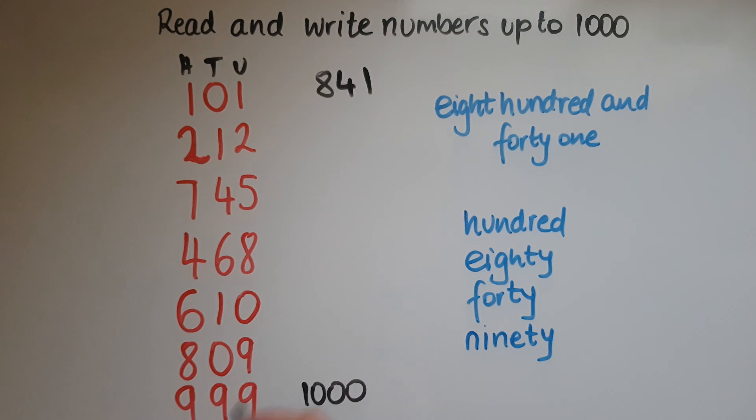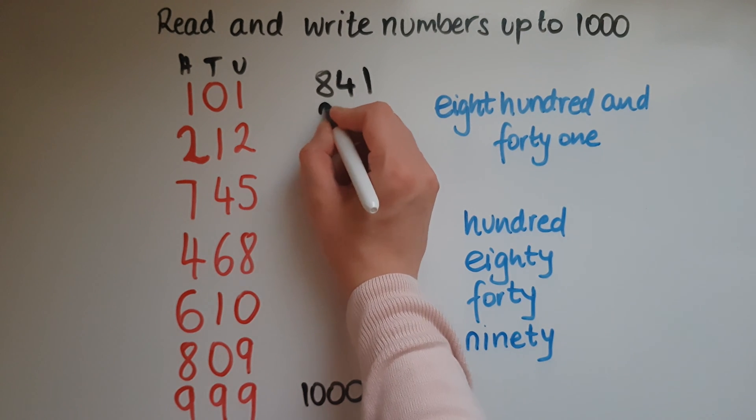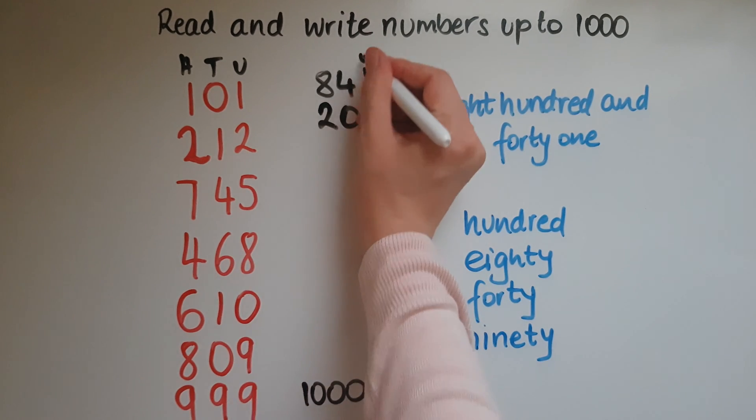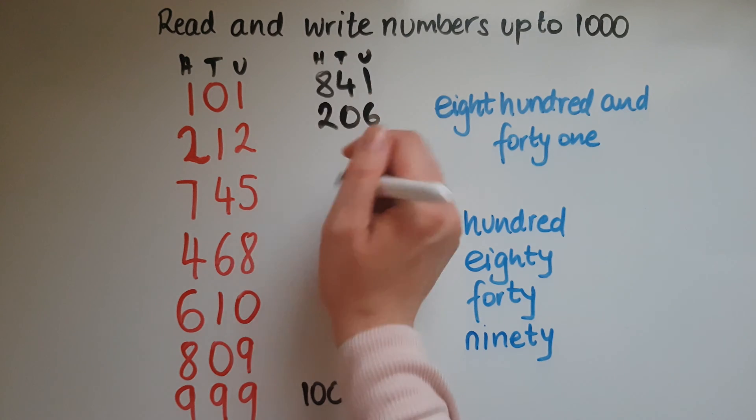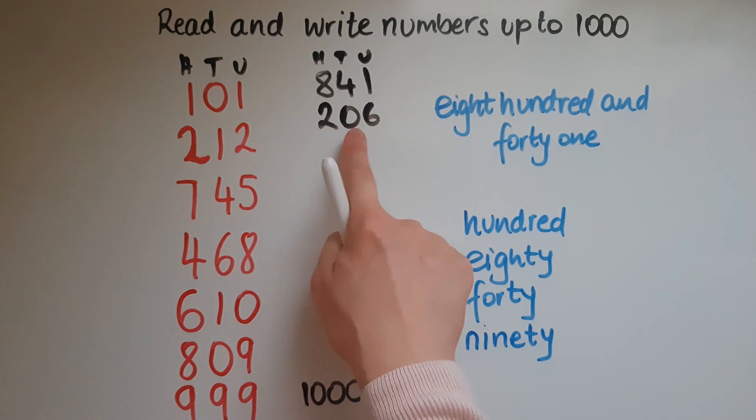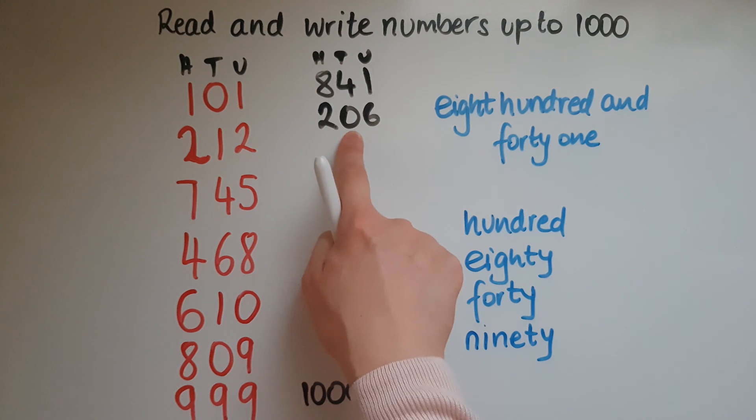How do we write 206? Because we know we've got units, then tens, and hundreds. So when I say 200 and then 6, that means I need to put a zero in between because that's the place for the tens and I haven't got a 10 in this case.